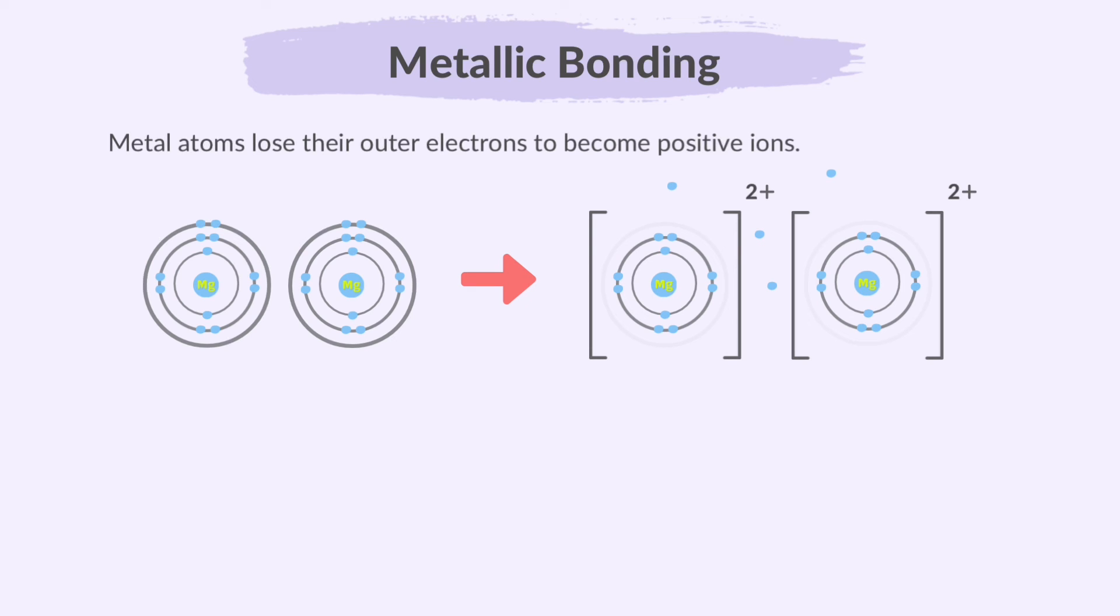Finally, we will learn about metallic bonding. Metal atoms lose their outer electrons to become positive ions. For example, magnesium atoms lose their outer electrons to become positively charged ions and these ions are held together by the attraction to the sea of free electrons.